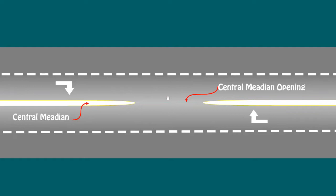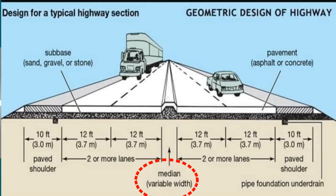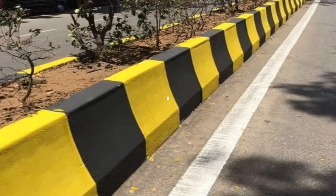Next is the central median or central verge. When the number of laning is increased from two laning to four laning or above, then the central median is used to separate the lanes passing in opposite direction to avoid any accidents.